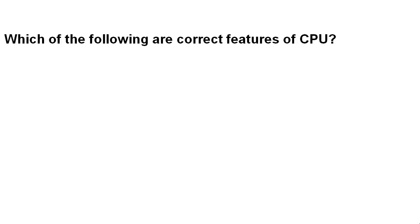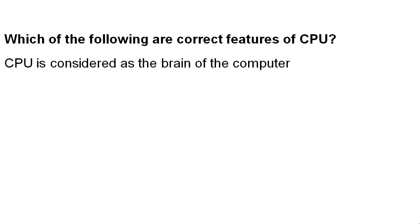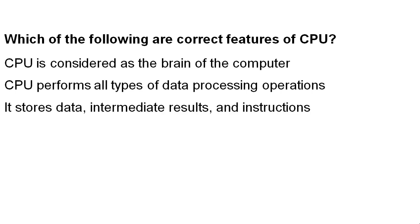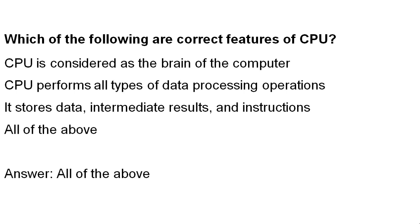Which of the following are correct features of CPU? CPU is considered as the brain of the computer. CPU performs all types of data processing operations. It stores data, intermediate results and instructions. The correct answer is all of the above.